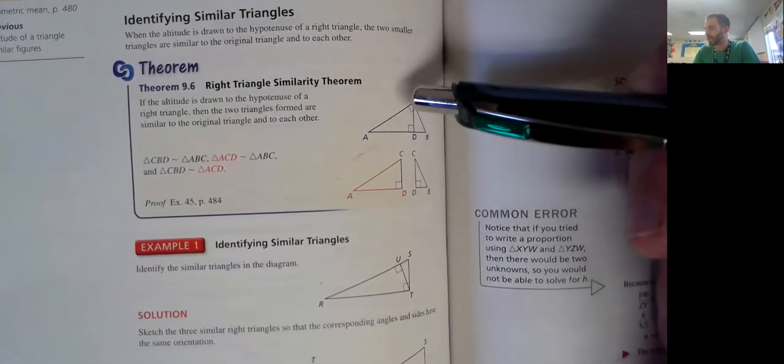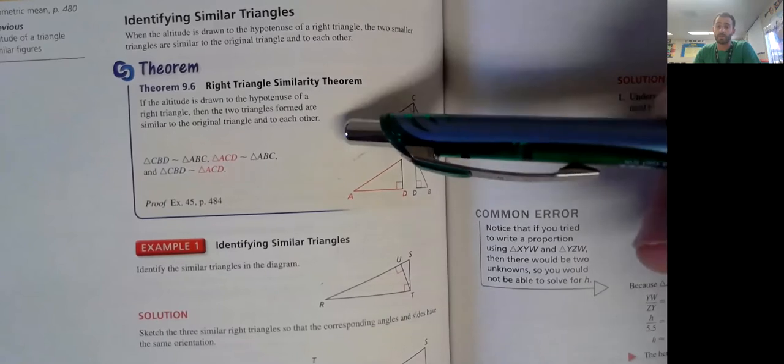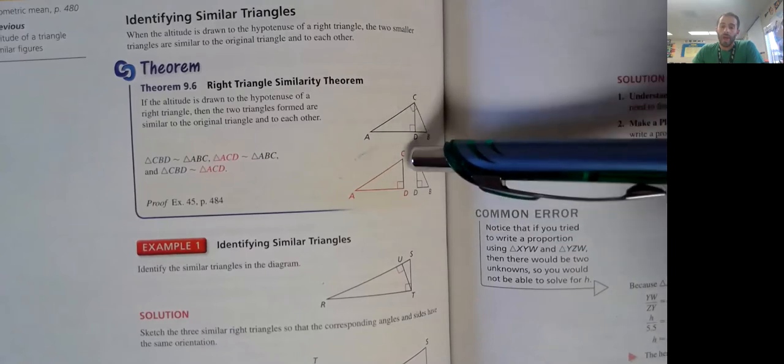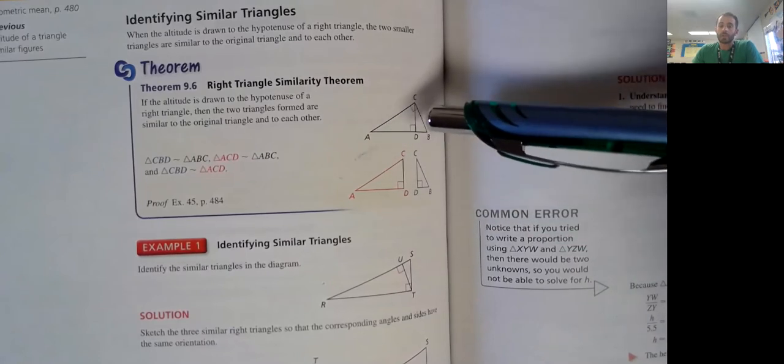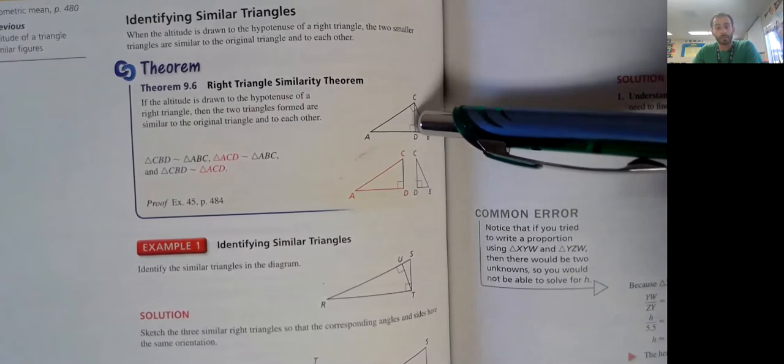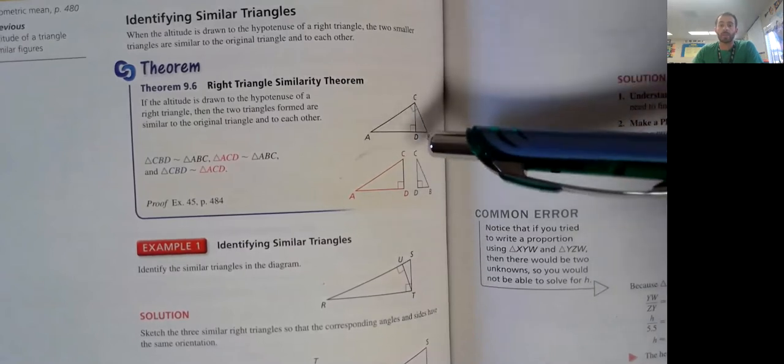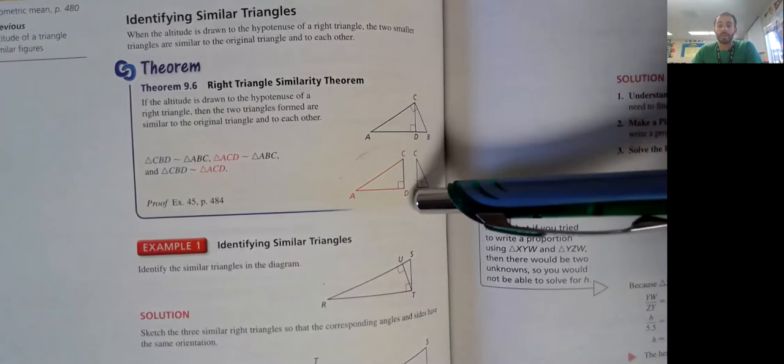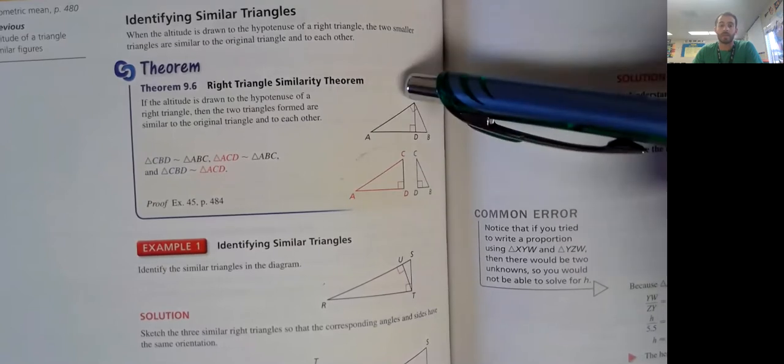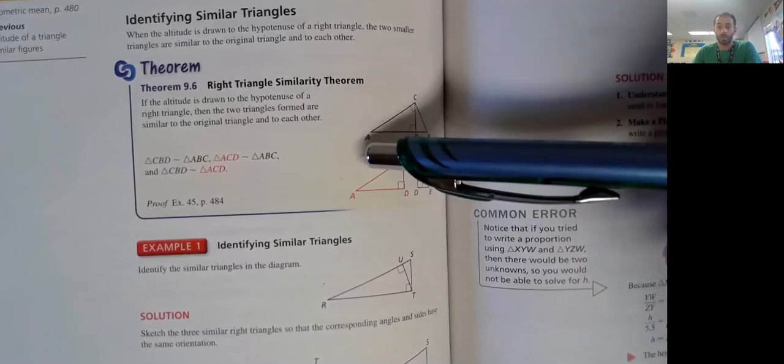We have a right triangle with an altitude that's a line going from here down perpendicular to the hypotenuse. When we do that, each side of that altitude, so each of the two smaller triangles that we made are similar, and they're similar to the larger triangle. So triangle BCD is similar to ACD is similar to ABC. So small is similar, small is similar to the whole kit and caboodle.